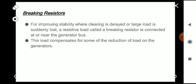Second method is braking resistors. For improving stability where clearing is delayed or large load is suddenly lost, a resistive load called a braking resistor is connected at or near the generator bus. This load compensates for some of the reduction of load on the generators.